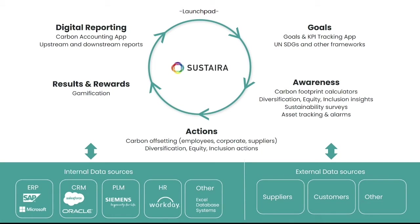As you're creating your launchpad, you're already at two or three different tiles between the goal setting, carbon calculator, and DEI application. This continues all throughout the circle — you can add on carbon offsetting, a gamification module, and even carbon accounting, which we're going to dive a little bit more in depth. The carbon accounting one is the one that dives into scope one, two, and three carbon emissions, so you can understand your impact all the way through your value chain.